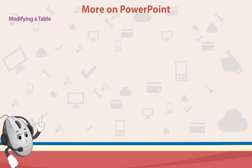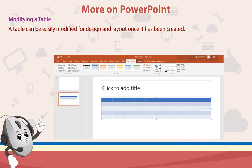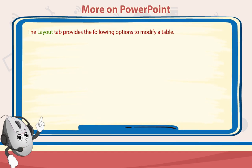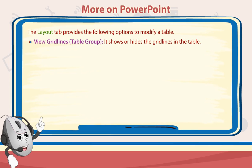A table can be easily modified for design and layout once it has been created. Click on the table to modify its structure — two new tabs will appear on the ribbon. The Design tab is used to format a table. The Layout tab provides various options to modify a table. View Gridlines shows or hides the grid lines in the table.